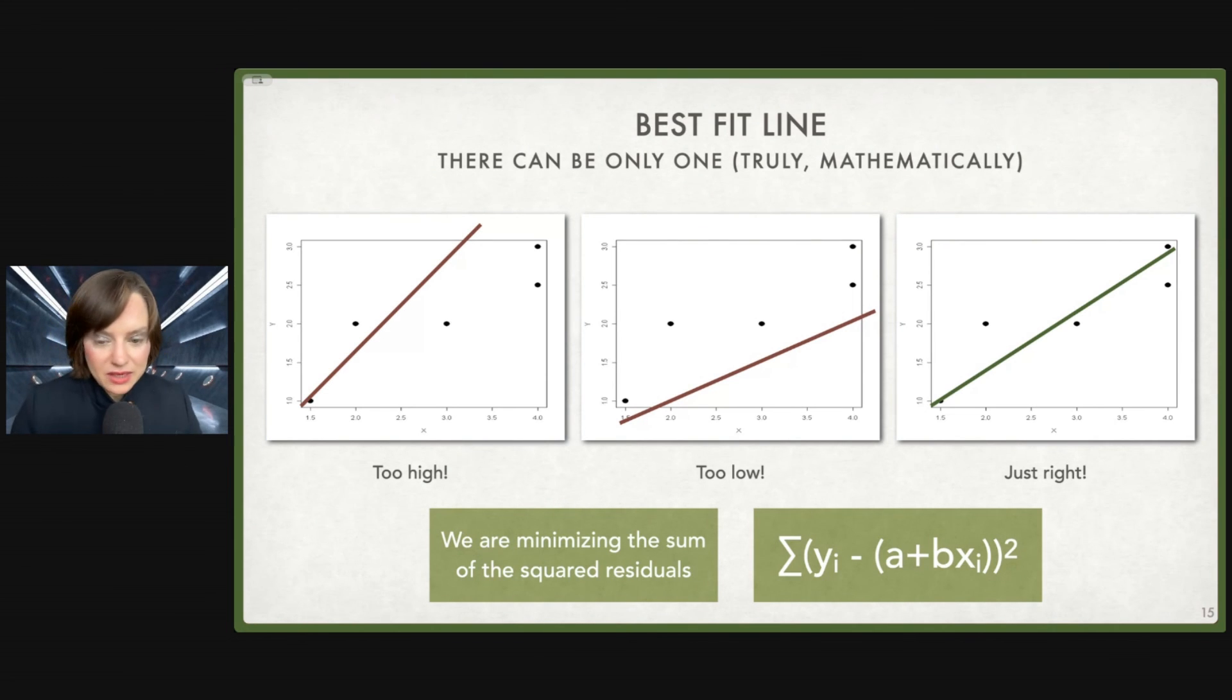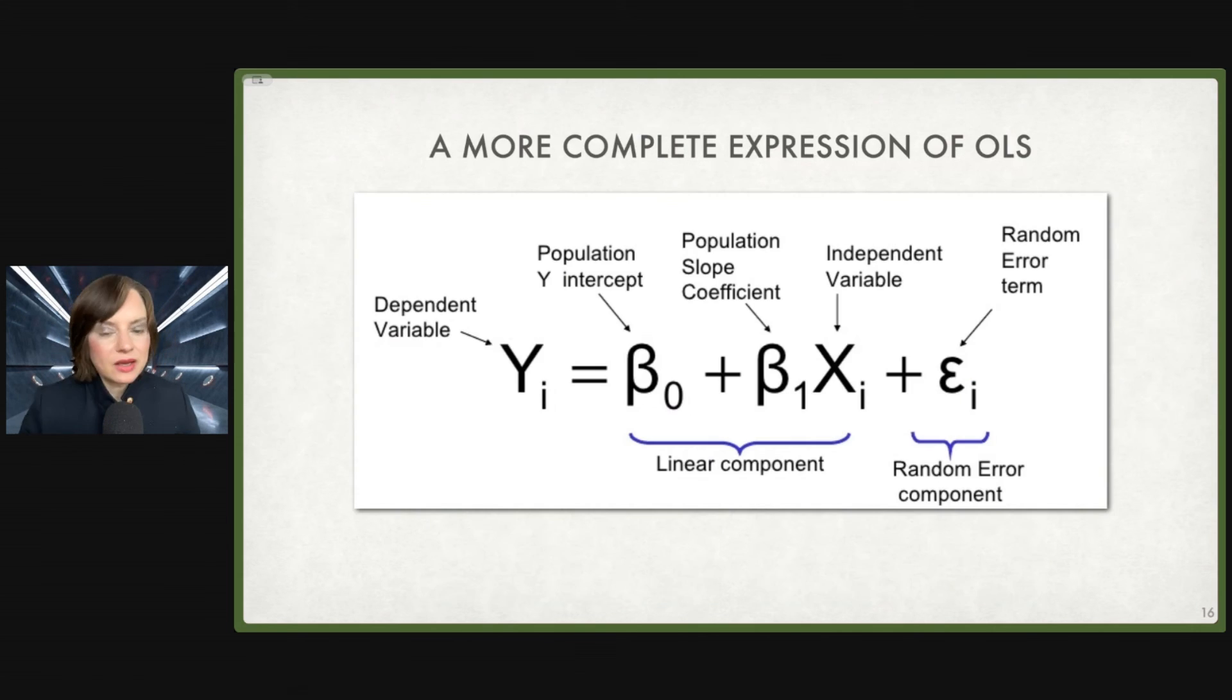As I said, if this is a stats class, we'd get into it. Here is a more complete expression of OLS that you may see out there in the world. So our dependent variable is our Y equals beta 0, beta 1 as the intercept and the slope coefficient. And there is also a random error term to capture anything that is not captured in our model. And if you have more than one independent variable, it will be marked as beta 2, beta 3, beta 4 in our equation. All right. We'll leave that there.